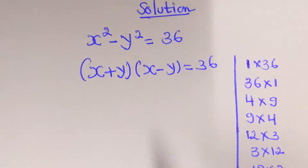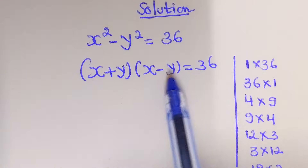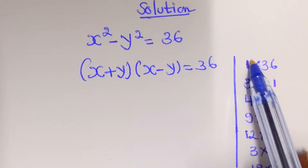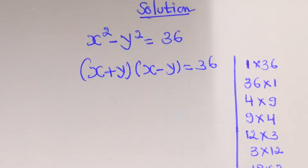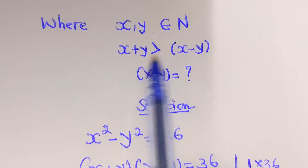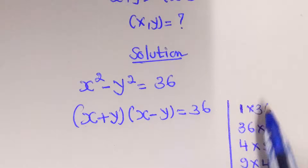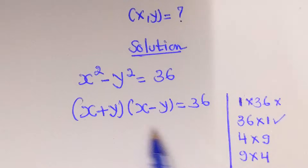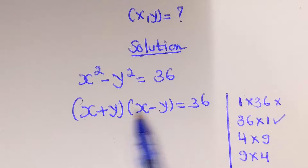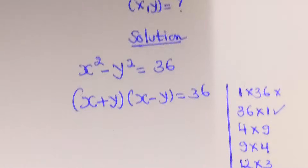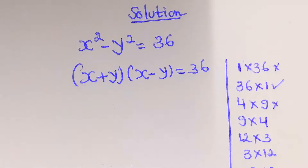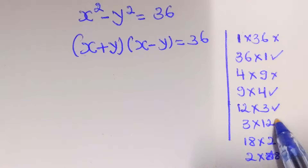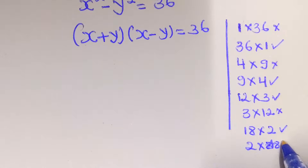Now, look here. This is x plus y times x minus y, and we have to equate them to each other. From the first case, x plus y must be equal to 1 and x minus y equal to 36. But the condition says x plus y is greater than x minus y, so the first number should be greater than the second one. So that case is not included — we shall accept the case where x plus y equals 36 and x minus y equals 1. Similarly, we accept 9 times 4 and 12 times 3, and reject their reverses.